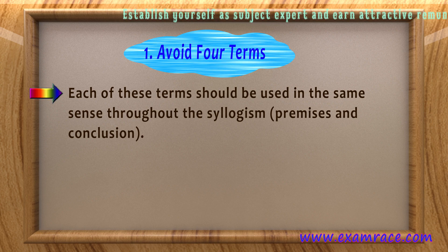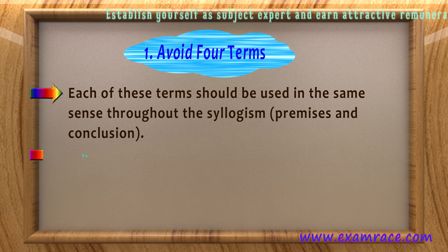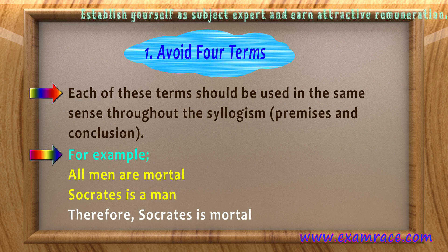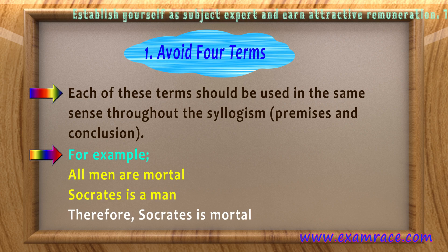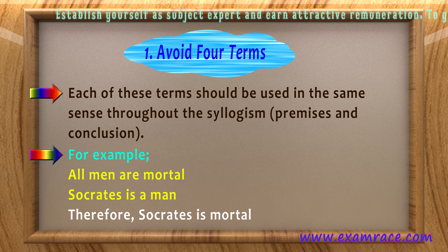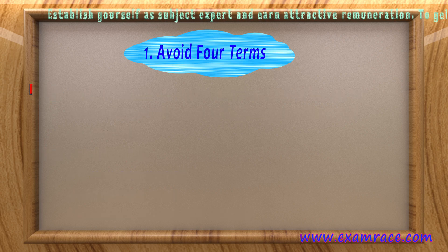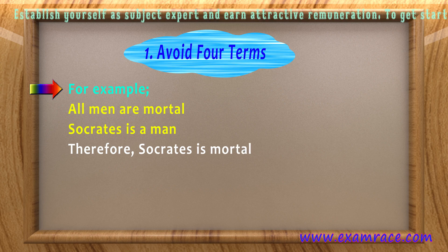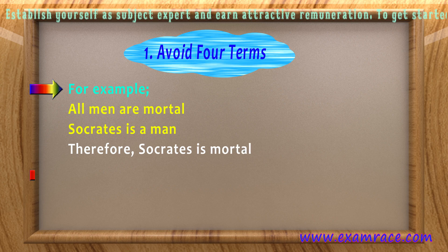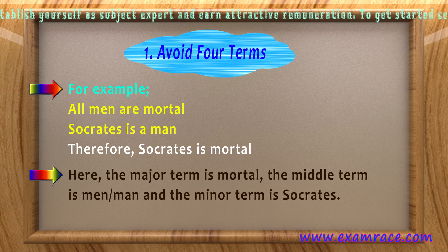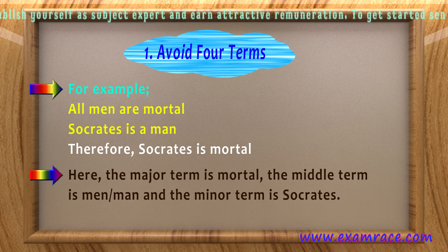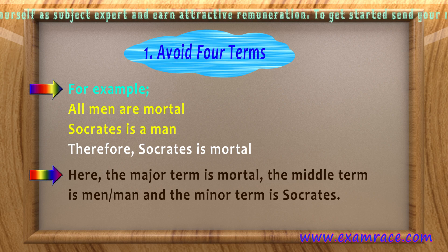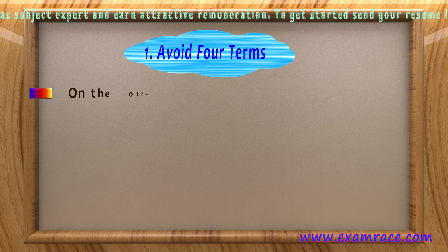For example: 'All men are mortal; Socrates is a man; therefore Socrates is mortal.' In this syllogism, the major term is 'mortal', the middle term is 'men/man', and the minor term is 'Socrates'.